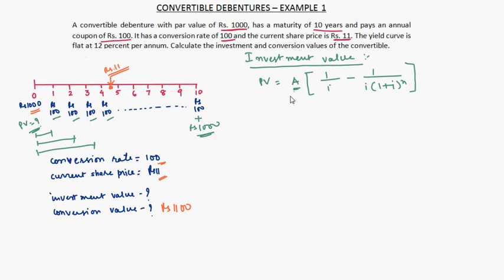A is the annuity amount which is rupees 100. i is the required rate of return, which is given as 12 percent. Note that the coupon rate is 10 percent, but for present value calculation we use the required rate of return of 12 percent. So i equals 12 divided by 100, which equals 0.12, and n equals 10 years.